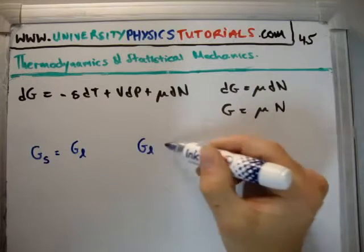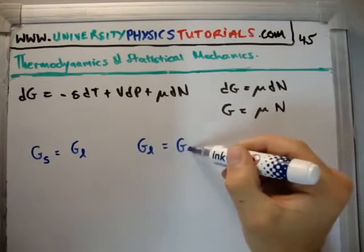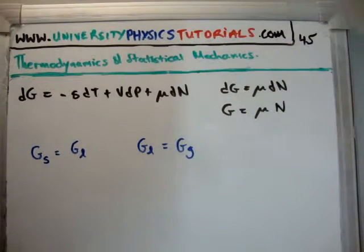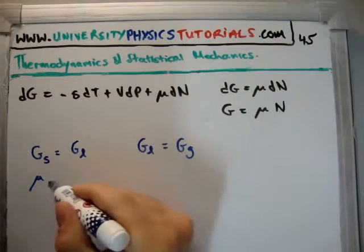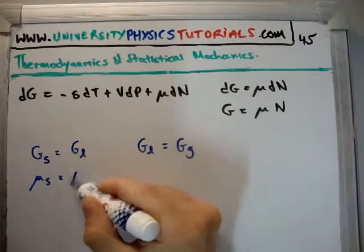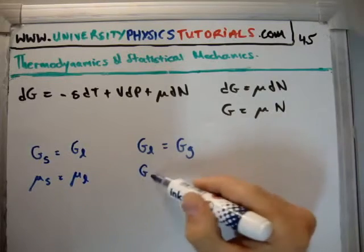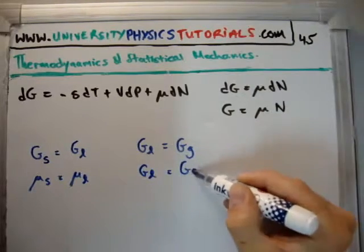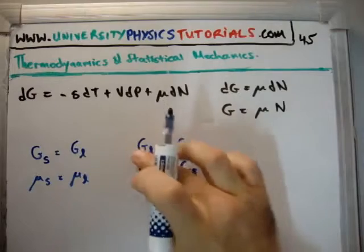The Gibbs free energy of the liquid equals the Gibbs free energy of the gas at the liquid-gas phase boundary. Similarly, we could have the chemical potential of the solid equal to the chemical potential of the liquid, μ_solid = μ_liquid, and μ_liquid = μ_gas.